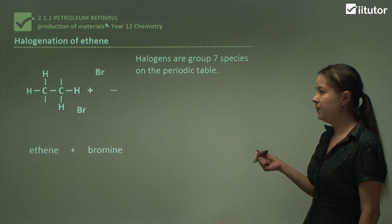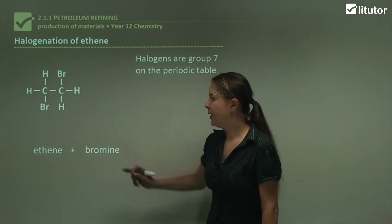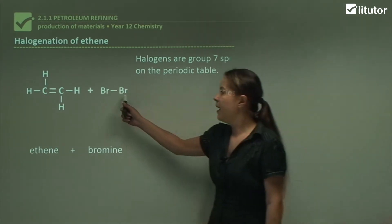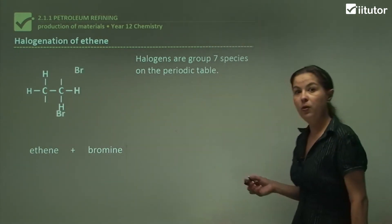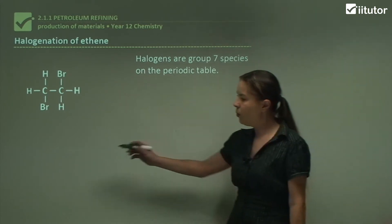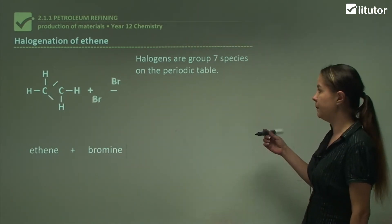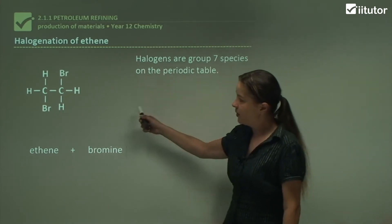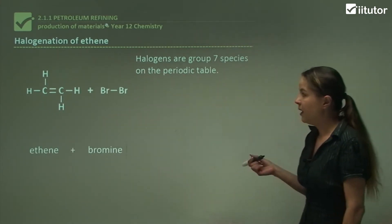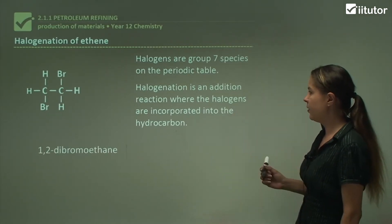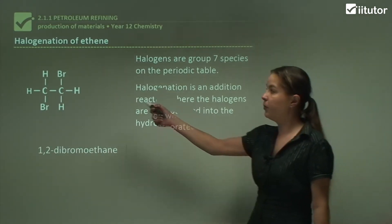Now on to halogenation. What we're doing is adding a halogen to ethene, in this case bromine, and the double bond breaks and the bromine adds on to form 1,2-dibromoethane, which I discussed earlier. With halogenation, you can use different halogens other than just bromine, such as chlorine or fluorine.